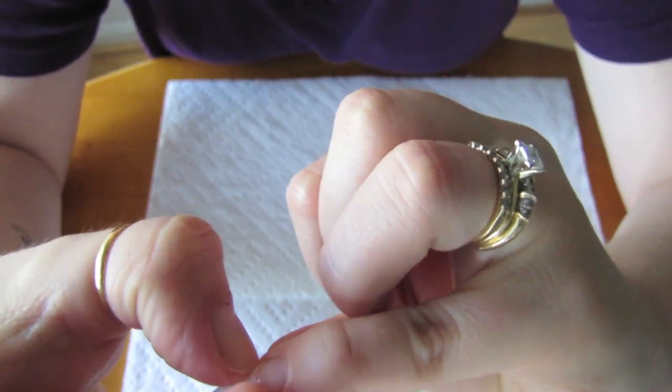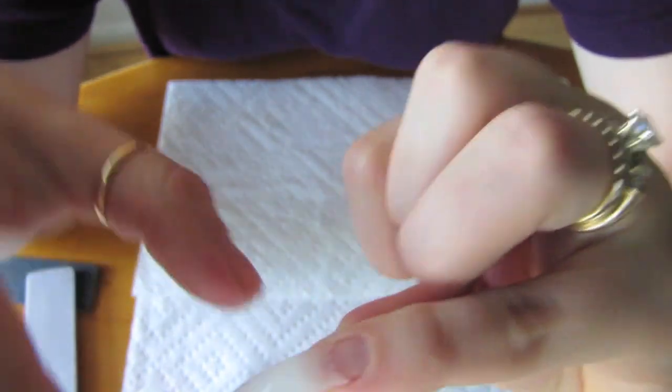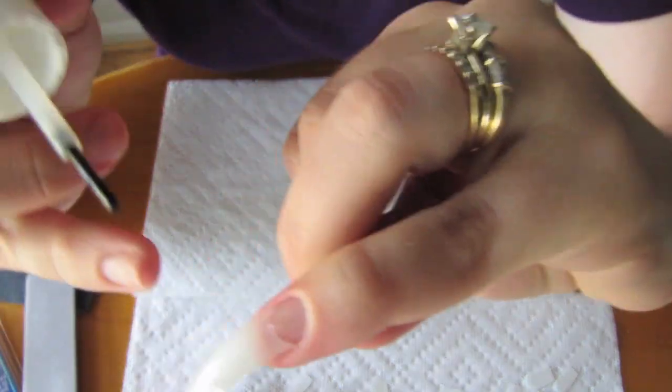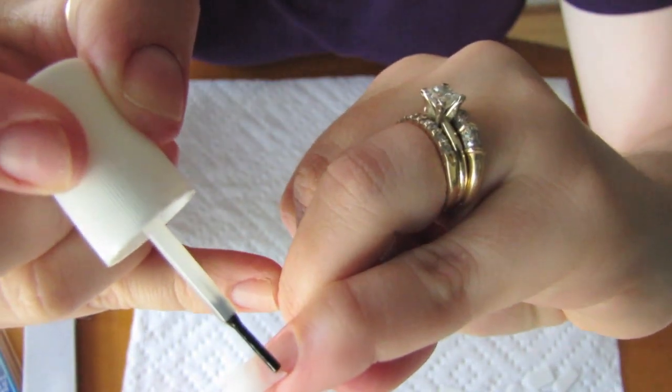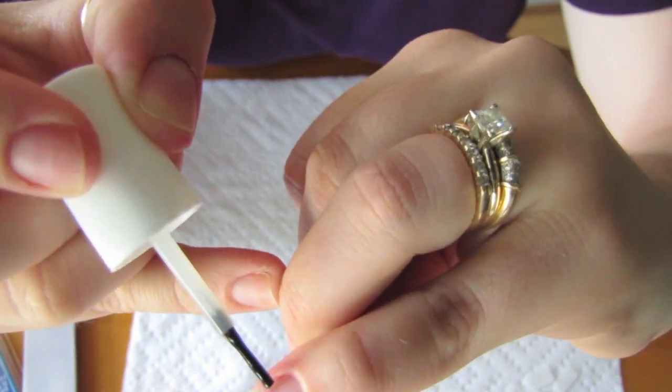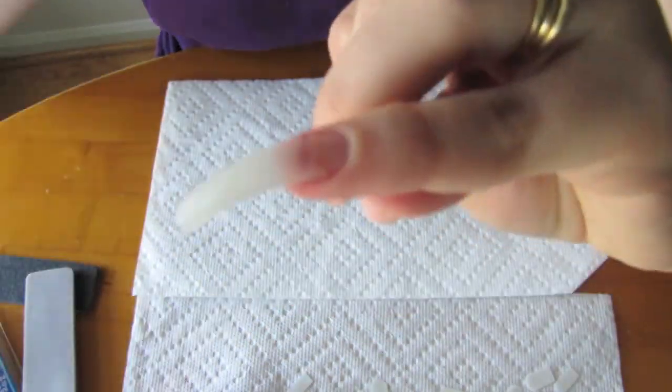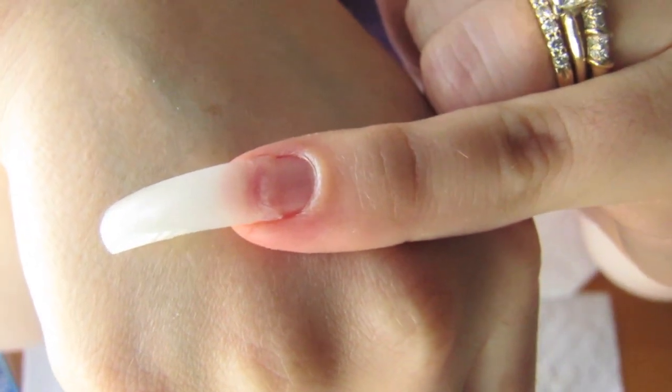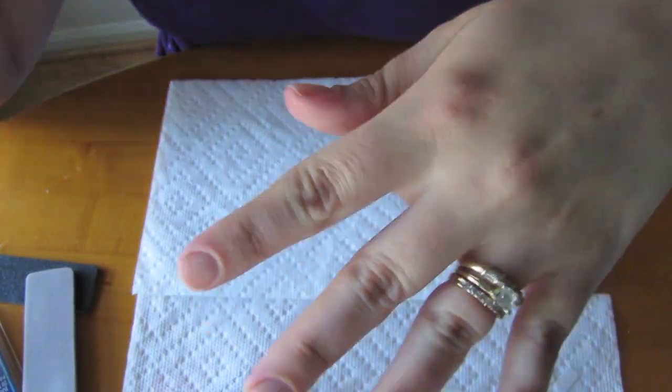Then press down the sides to make sure that they adhere. And then to create a perfect seam, I'm going to take a tiny amount of nail glue and go across the seam just like that. I'm going to use my Hurry Up Nail Glue Dryer and quickly dry it. And now you have the tip applied. I'm going to apply the rest of the tips to my left hand and I'll be right back.